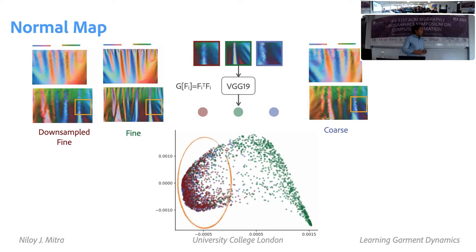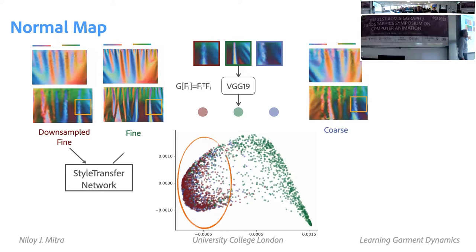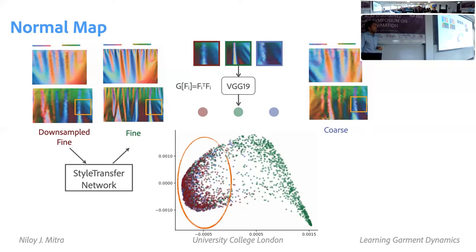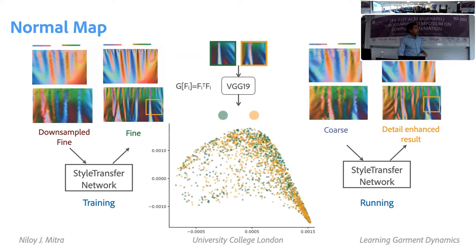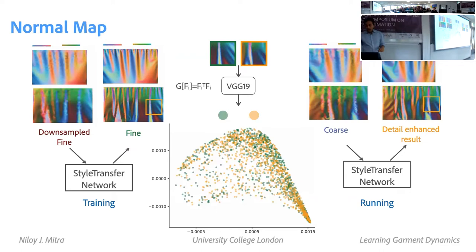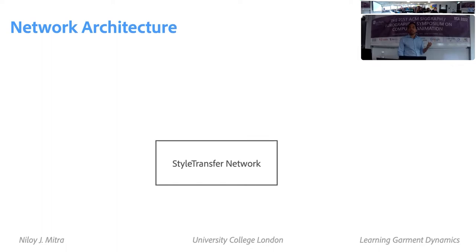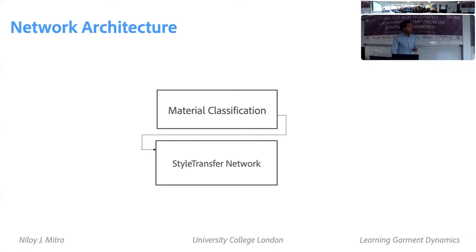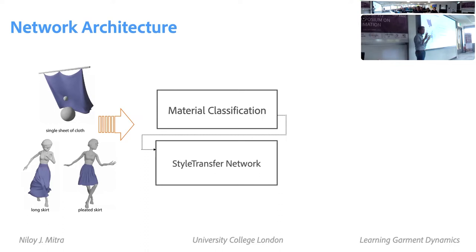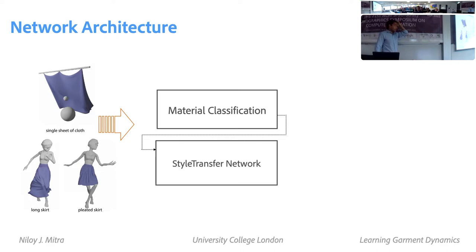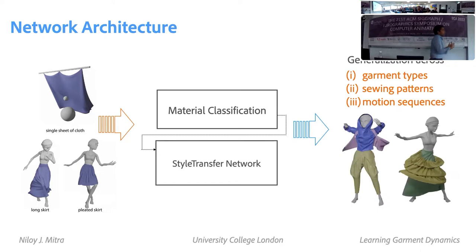This turns out to be a good problem because we have paired data available. It's a very simple image-to-image translation problem. We can use that at runtime to get fine details. If you do this, the distributions now match. We also need to be aware of what material it is — silk, etc. — so there's a material classification module. The training data is quite simple: I just need to work in patches; I don't need to rely on full geometry because it's very local. Once you have the normal, you integrate it out to get the final surface. And automatically we get nice generalization properties.